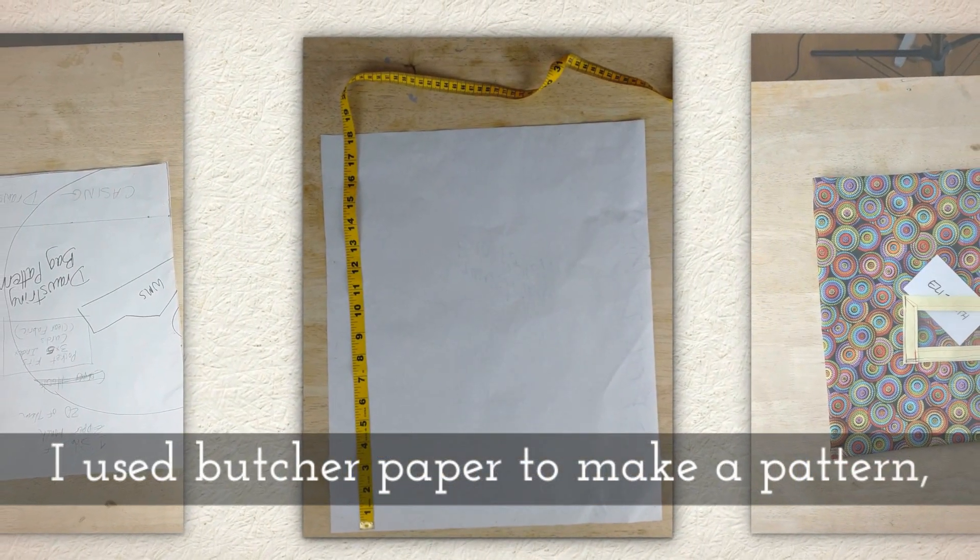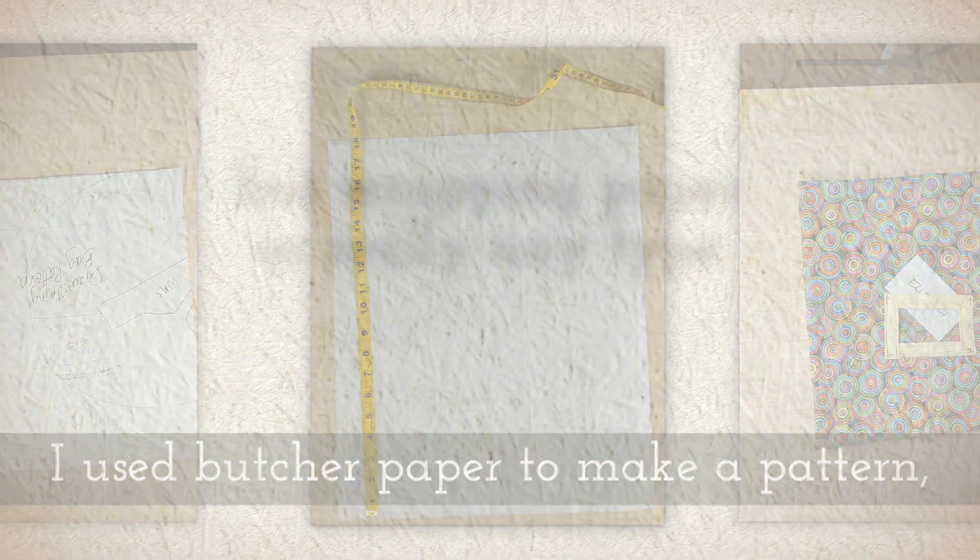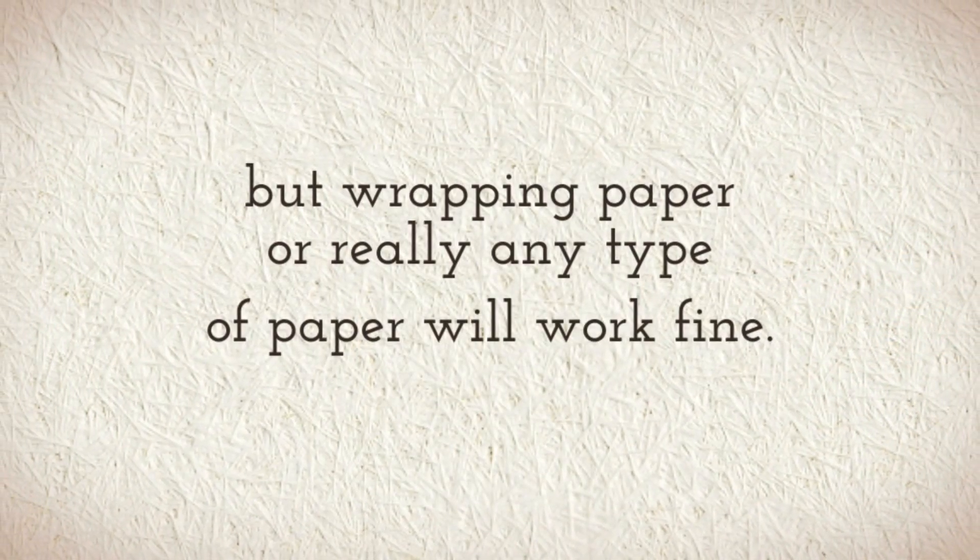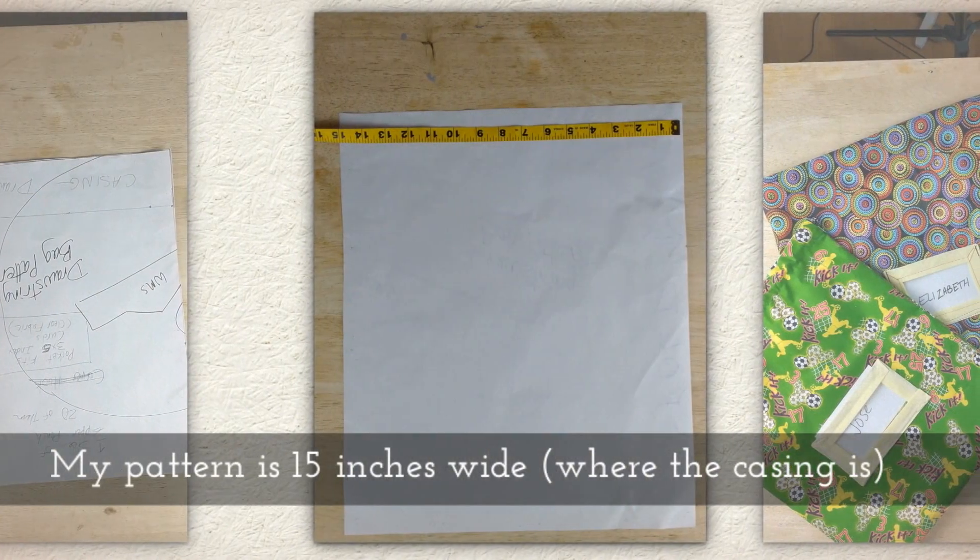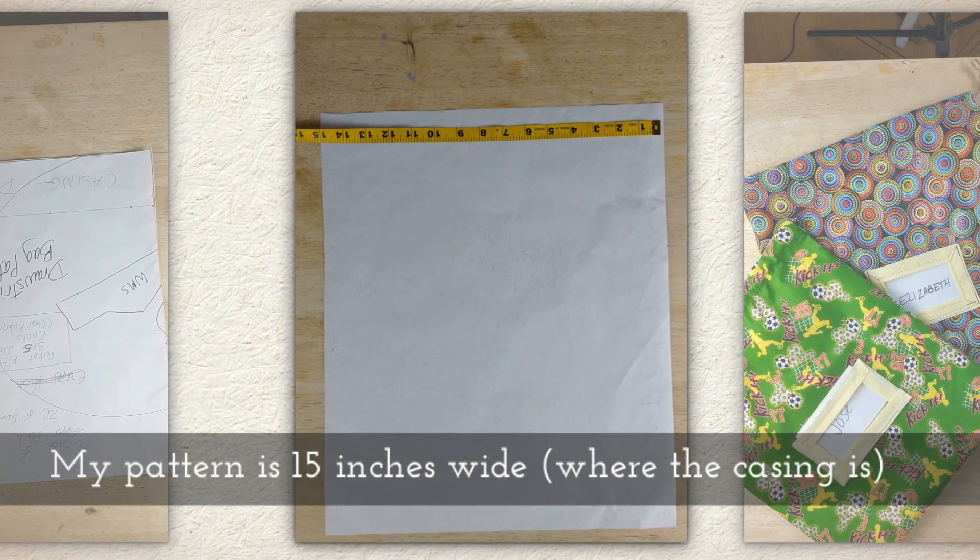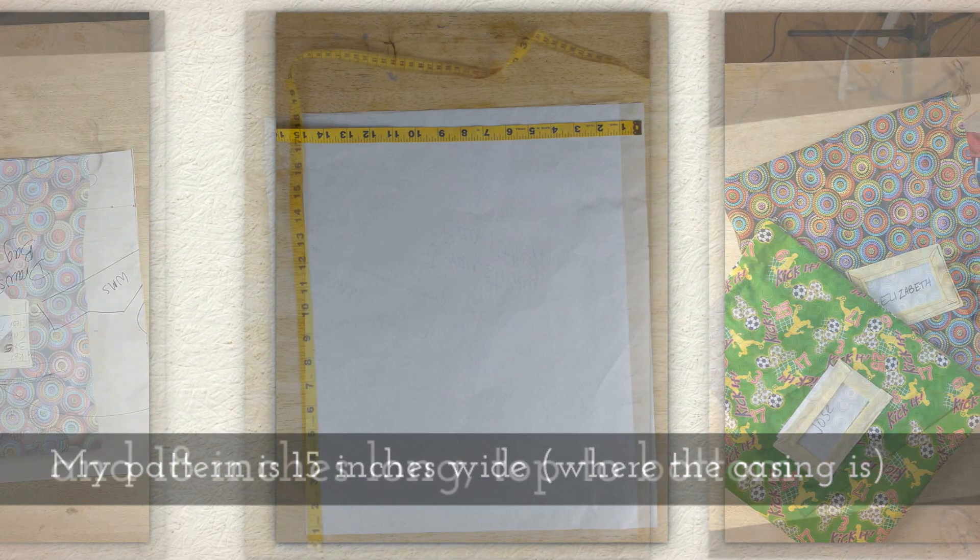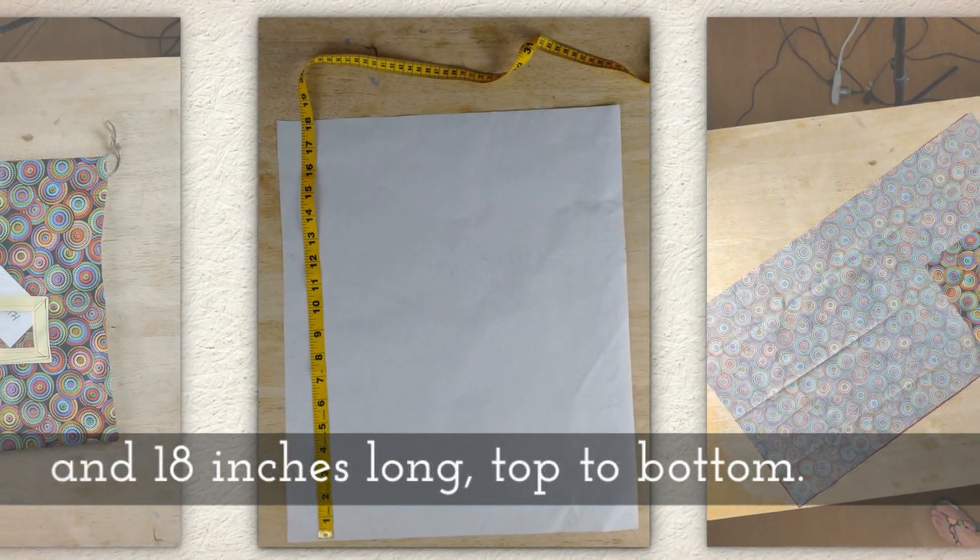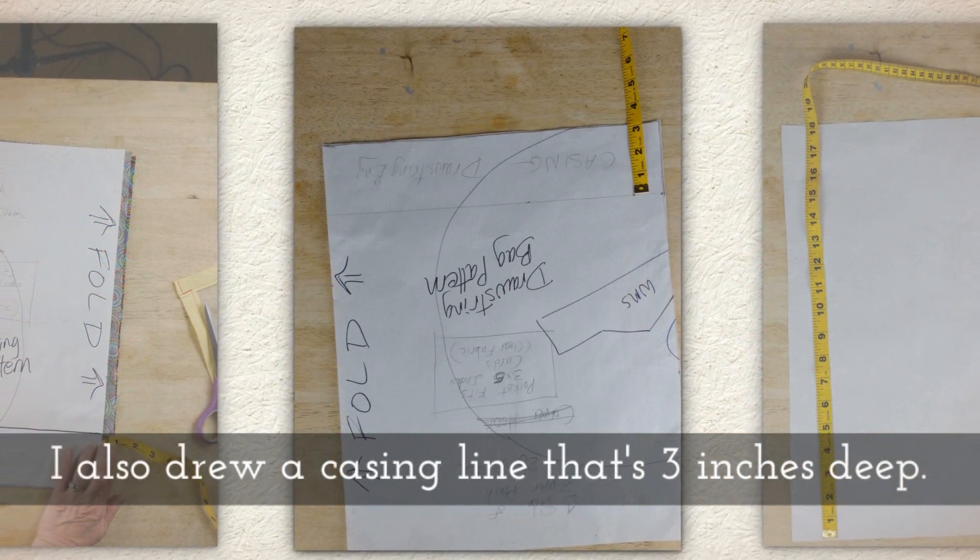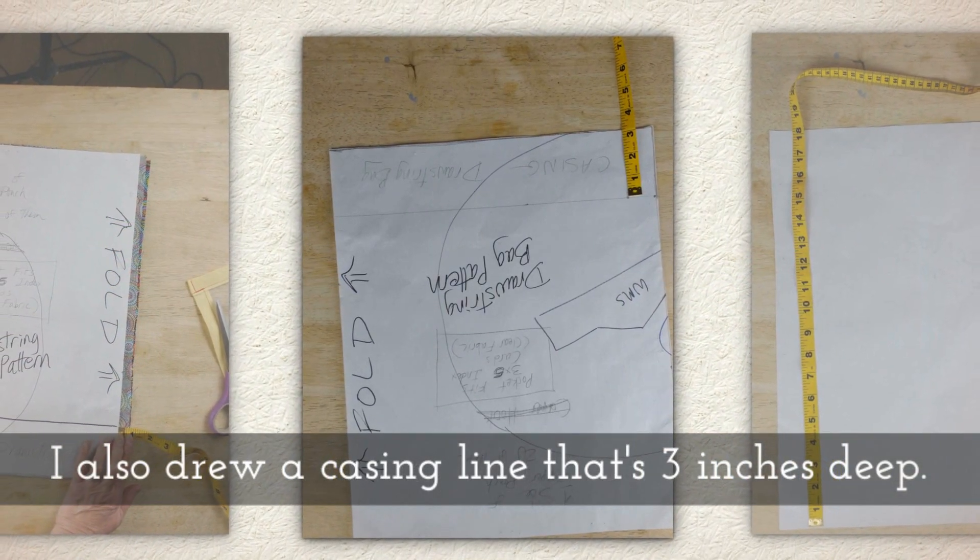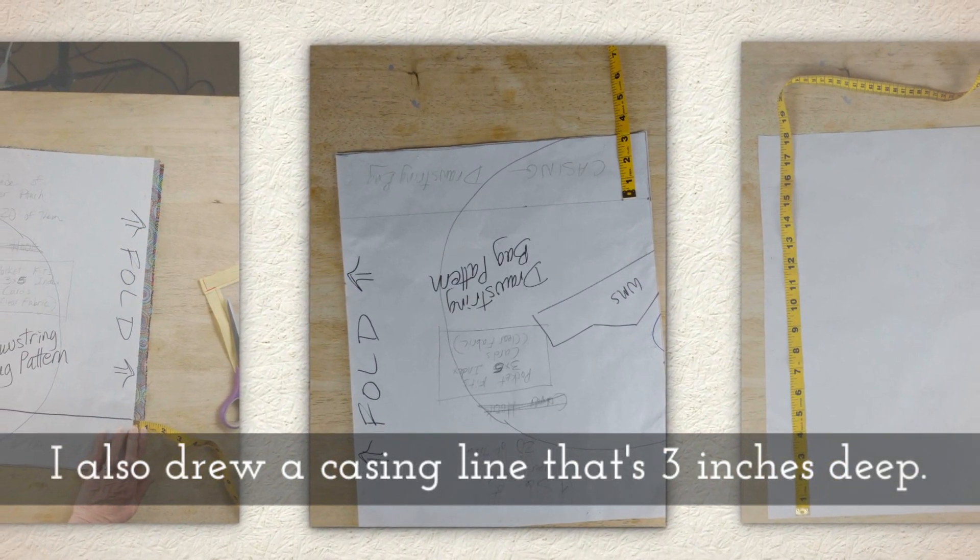Now I used some butcher paper to make myself a pattern, but wrapping paper or really any type of paper will work fine. My pattern is 15 inches wide where the casing will be and 18 inches long from top to bottom.